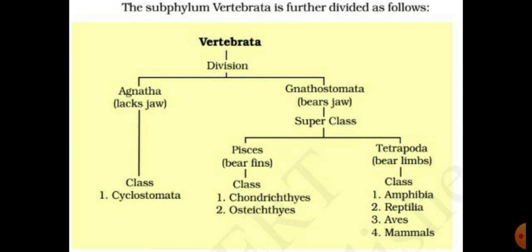Protochordata can be divided into three subphyla: the first is Cephalochordata, the second is Urochordata, and the third is Hemichordata. Almost all Protochordates are aquatic animals — mostly marine animals found in seawater.